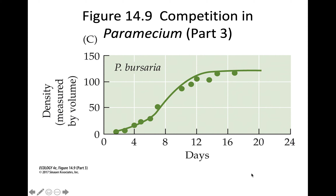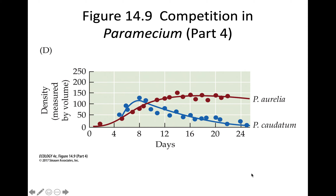But what happened when you grow P. aurelia with P. caudatum? P. aurelia drove P. caudatum to extinction. This is thought to be because they both fed on very similar bacteria floating at the same level in the media they were stored in, so competition was very strong for the same source of food.